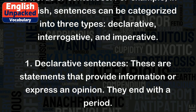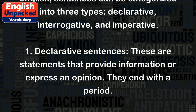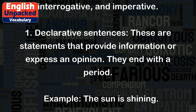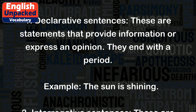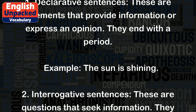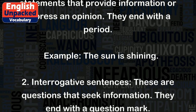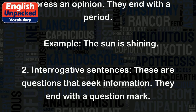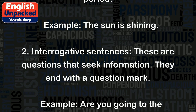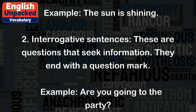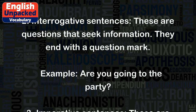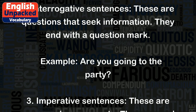1. Declarative sentences are statements that provide information or express an opinion. They end with a period. Example: the sun is shining. 2. Interrogative sentences are questions that seek information. They end with a question mark. Example: are you going to the party?